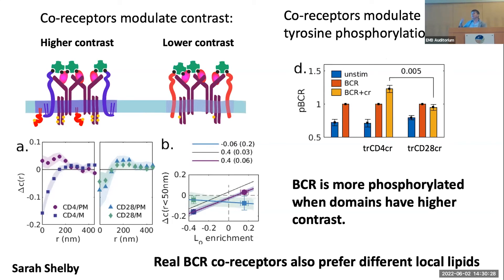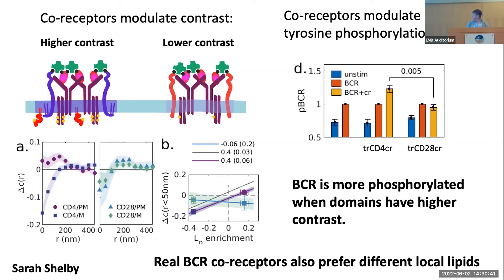Interestingly, real BCR co-receptors also have different anchorings to the plasma membrane. This has already been proposed as part of the puzzle of how co-receptors work in regulating the activity of B cell receptor activation.